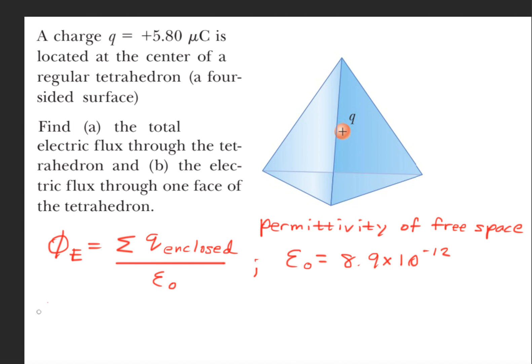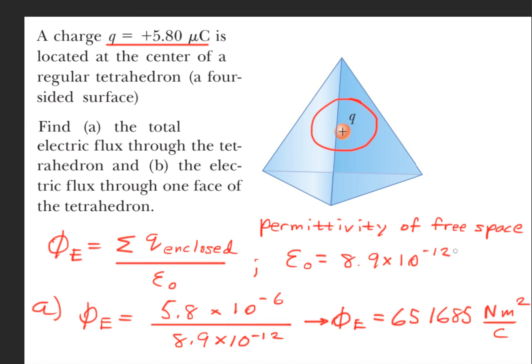So if we go ahead and solve for part A, we're given that inside this enclosed surface we only have Q, and we're given that Q was 5.8 microcoulombs, so there's nothing else to sum in here. We'll write that the flux is equal to 5.8 times 10 to the minus 6 coulombs, and we'll divide that by 8.9 times 10 to the minus 12. So this gives us that the electric flux is 651,685 newton meters squared per coulomb.